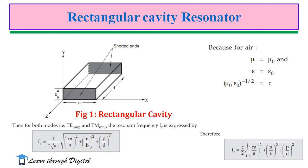From the figure, a, b, and d are the dimensions of the cavity — a and b are the cross-sectional dimensions and d is the length of the cavity. Therefore, the resonant frequency can also be expressed as: F = (c/2) × √((m/a)² + (n/b)² + (p/d)²).